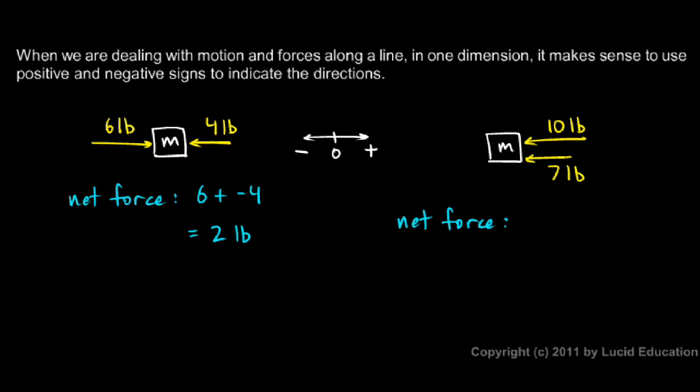So, the net force in this case is going to be negative 10 plus negative 7. If you really want to be correct, you'll put units on those. Say, negative 10 pounds plus negative 7 pounds. And that gives you negative 17 pounds. The net force is negative 17 pounds. What does it mean to have a negative force? Well, it means a force in the negative direction. In this case, that means a force to the left. So, the positive and negative signs help us to take the direction into account mathematically.